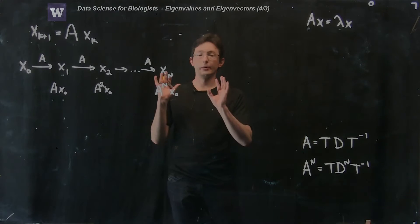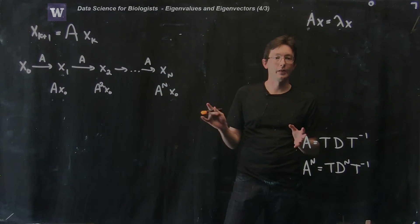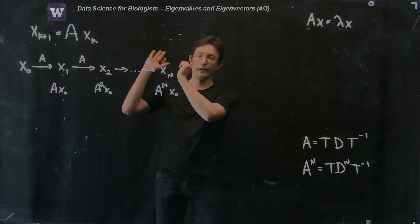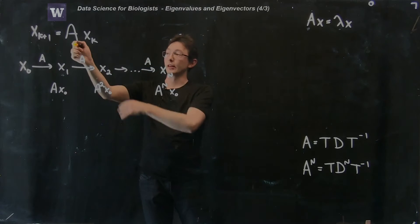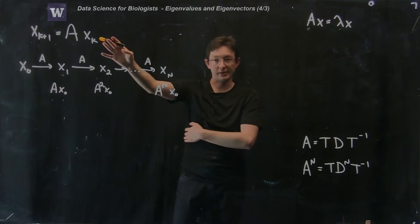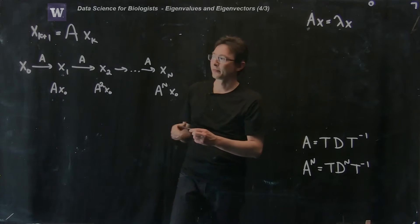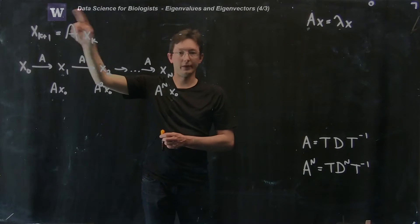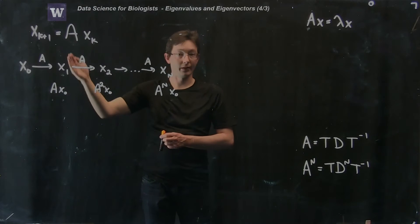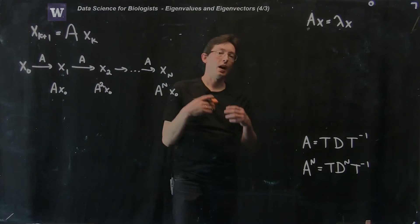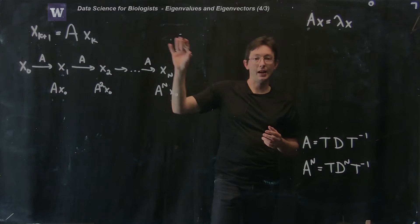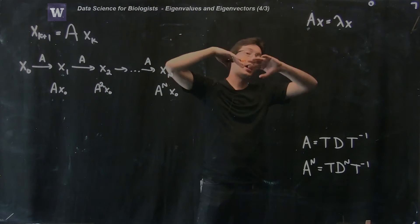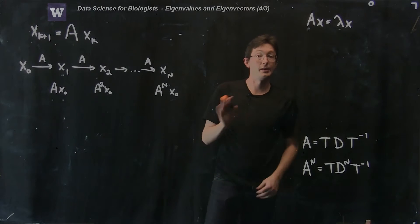The last part we need to show with eigenvalues and eigenvectors is essentially to tie together these two pieces. We have an iterative system x_{k+1} = A * x_k, where x represents the state of the system at time k, and we're iterating it forward in time from x0 to x1 to x2 and so on. We're going to use eigenvalues and eigenvectors of matrix A to understand why sometimes this series expands and blows up to infinity, and why sometimes it contracts and decays to 0.